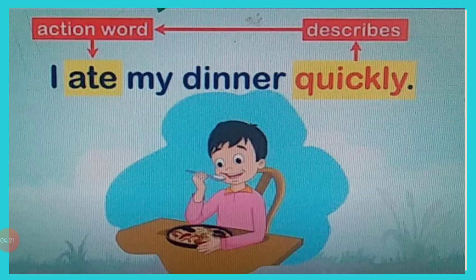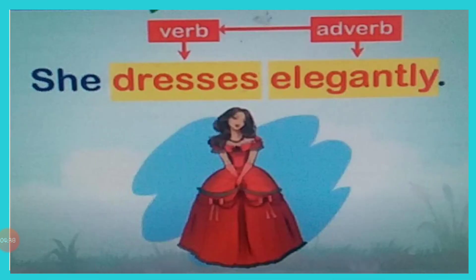Now look here. I ate my dinner quickly. Here, quickly tells us how the action happened — quickly describes the action word ate. Look at another example: She dresses elegantly. Here, elegantly is an adverb that describes the verb dresses.